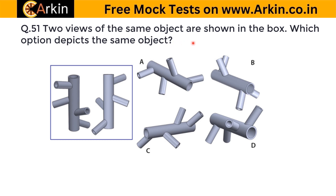Two views of the same object are shown. Which option depicts the same object? Observing the object, the four arms are in different directions — if one is going up the next is going down, then up, then down — so all arms are alternately placed: up, down, up, down. Checking option A, it looks correctly placed — this direction, opposite direction, up, then down. In option B, both look like they are in the same direction.